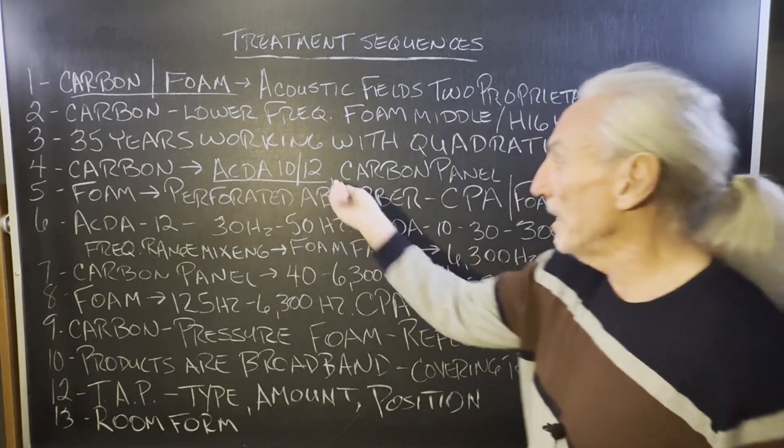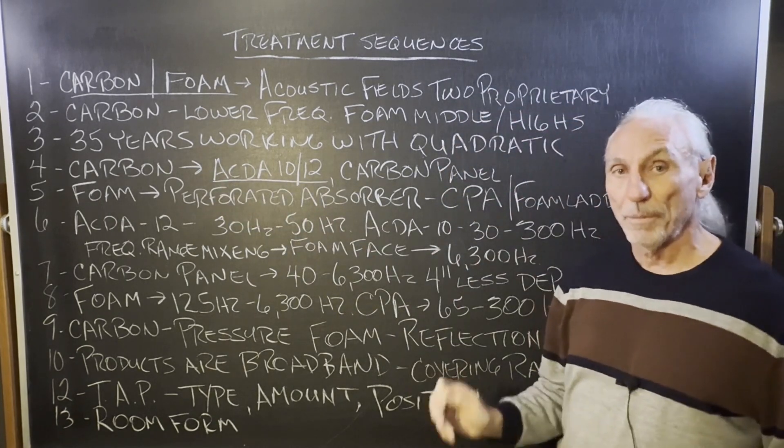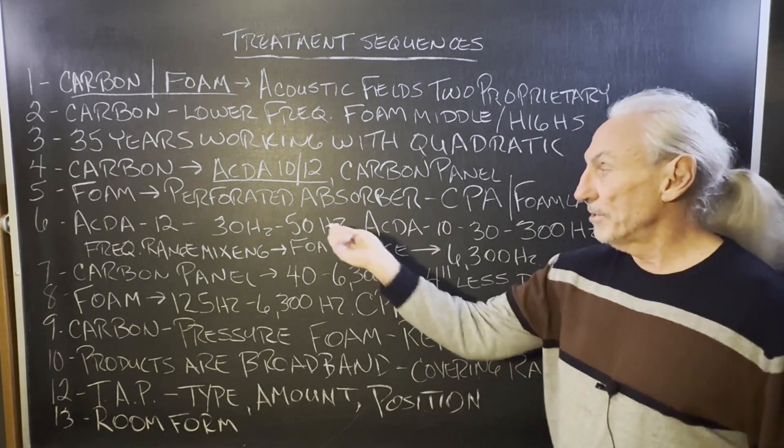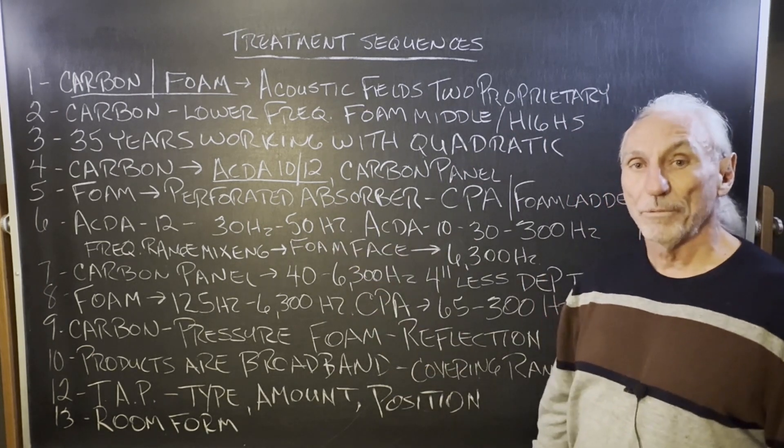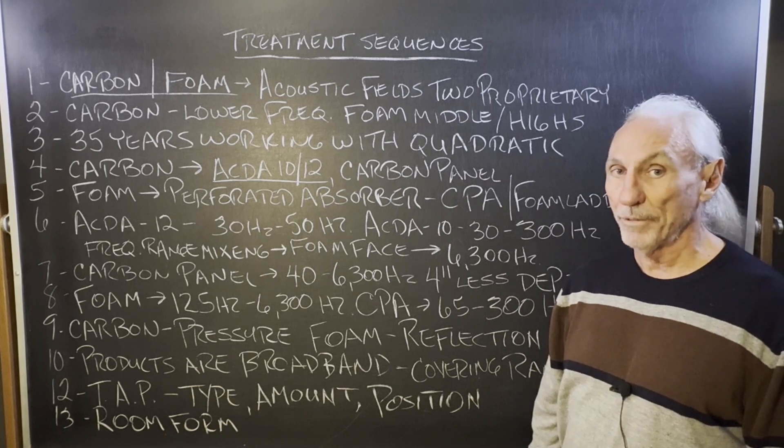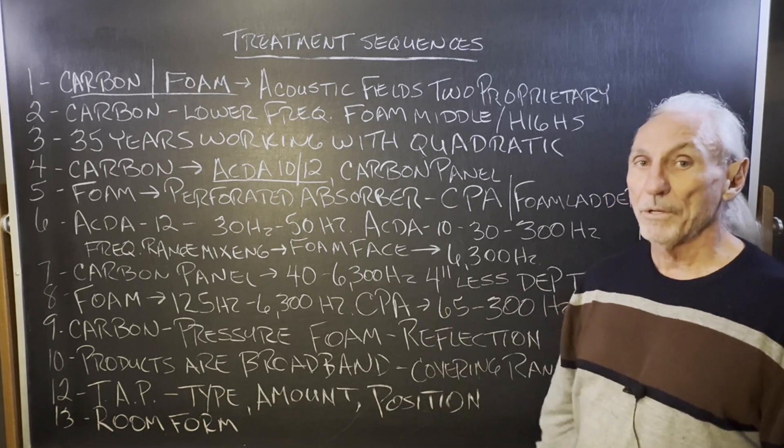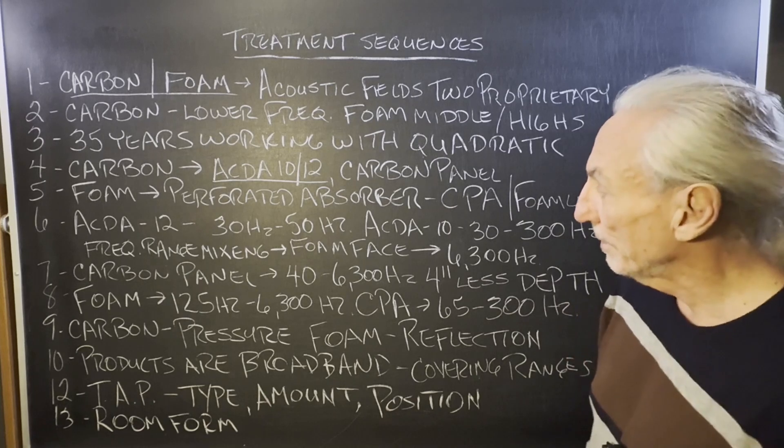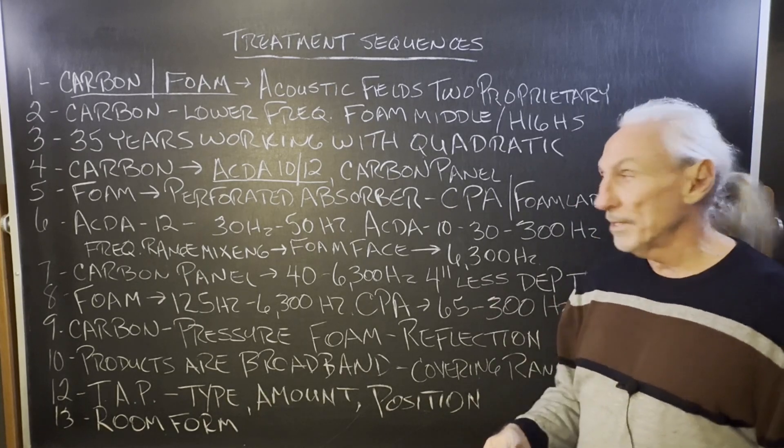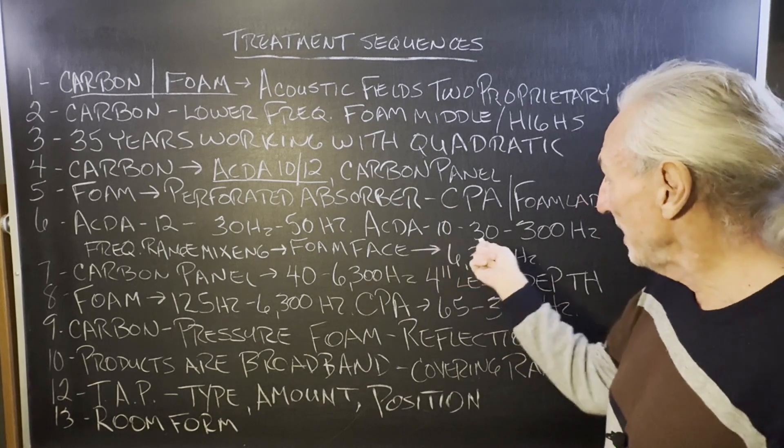Our carbon technology, we have the ACDA 10 and 12. Those are our big guns. So, the ACDA 12 is 30 to 50, most powerful low frequency absorber in the marketplace. You will not find one more powerful. 30, 40, and 50 hertz. Look at the absorption coefficients we get on our test data. Go into the about section of the website. It's all shown in there.